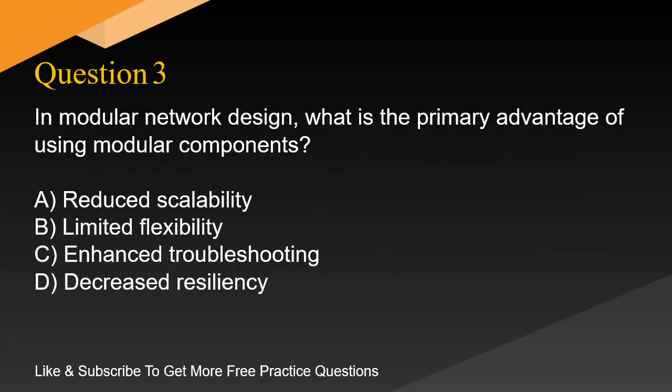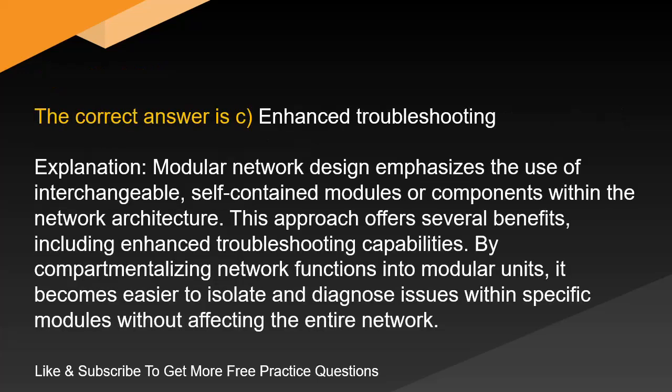Question 3. In modular network design, what is the primary advantage of using modular components? The correct answer is C: enhanced troubleshooting. Modular network design emphasizes the use of interchangeable, self-contained modules or components within the network architecture. This approach offers several benefits, including enhanced troubleshooting capabilities. By compartmentalizing network functions into modular units, it becomes easier to isolate and diagnose issues within specific modules without affecting the entire network.